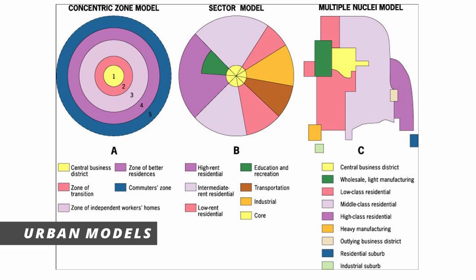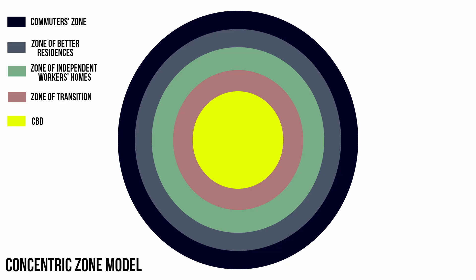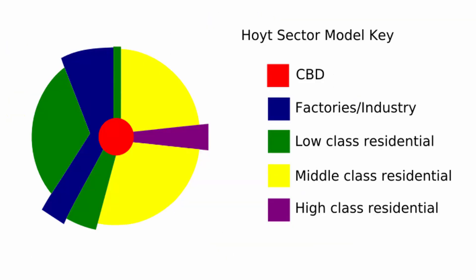Last but not least, we're going over some urban models, starting with the concentric zone model, which was modeled after Chicago. It begins with the CBD, then you have your lower class, then middle class and upper class. A pattern across many of these urban models is that the lower class is generally not next to the upper class. Then we have the sector model, which looks like pieces of a pie. Two things added to this model are transportation and industry — and the transportation here refers to the railway system, not cars. The lower class is next to the industrial sites because it was theorized they would go there to work.